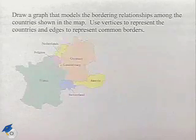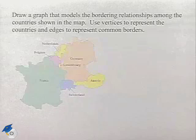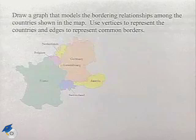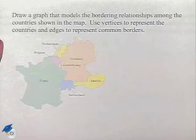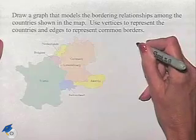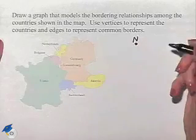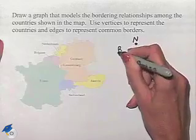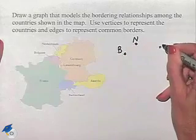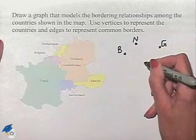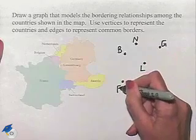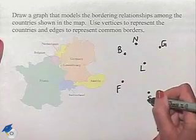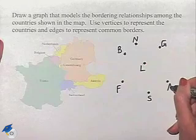Now we're going to draw a graph from a map. Draw a graph that models the bordering relationships among the countries shown in the map. Use vertices to represent the countries and edges to represent common borders. We have a map of a portion of Europe, and we're going to label N for the Netherlands, B for Belgium, G for Germany, L for Luxembourg, F for France, S for Switzerland, and A for Austria.